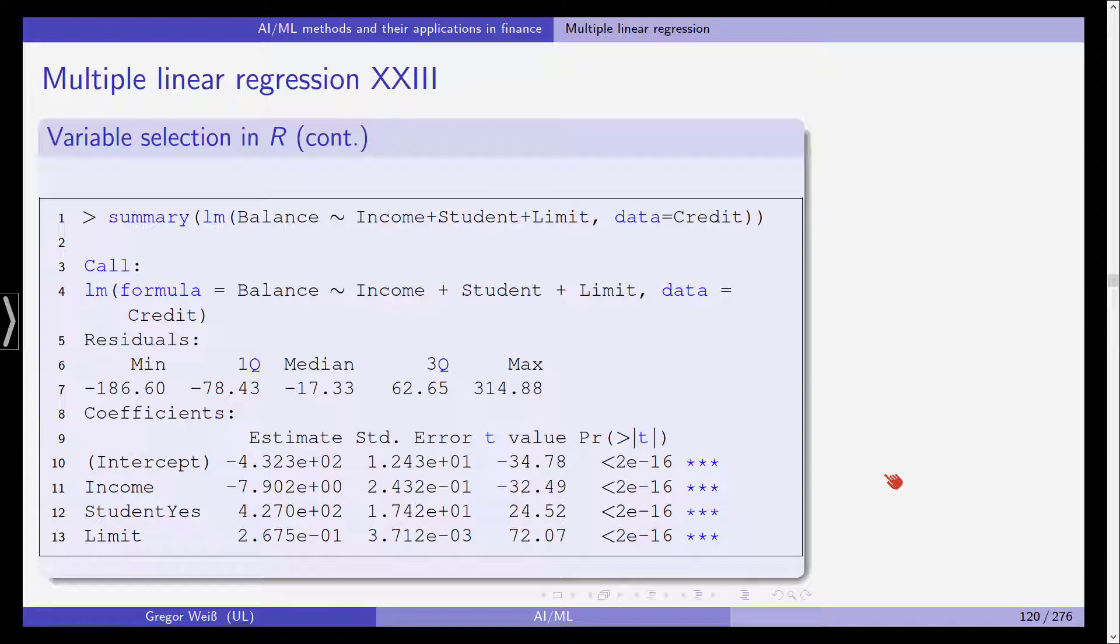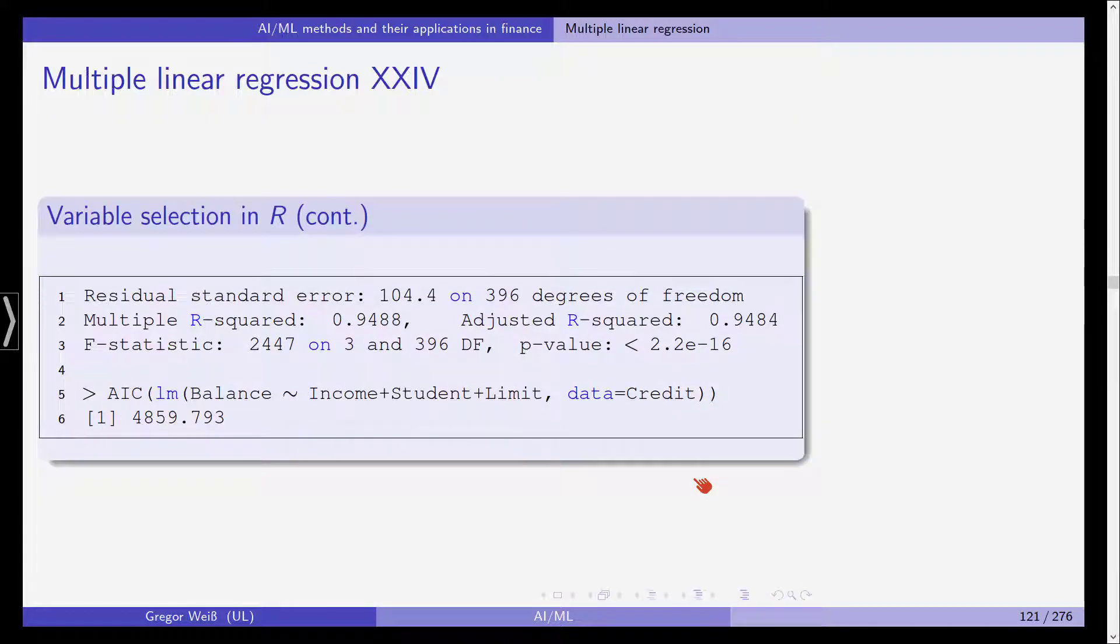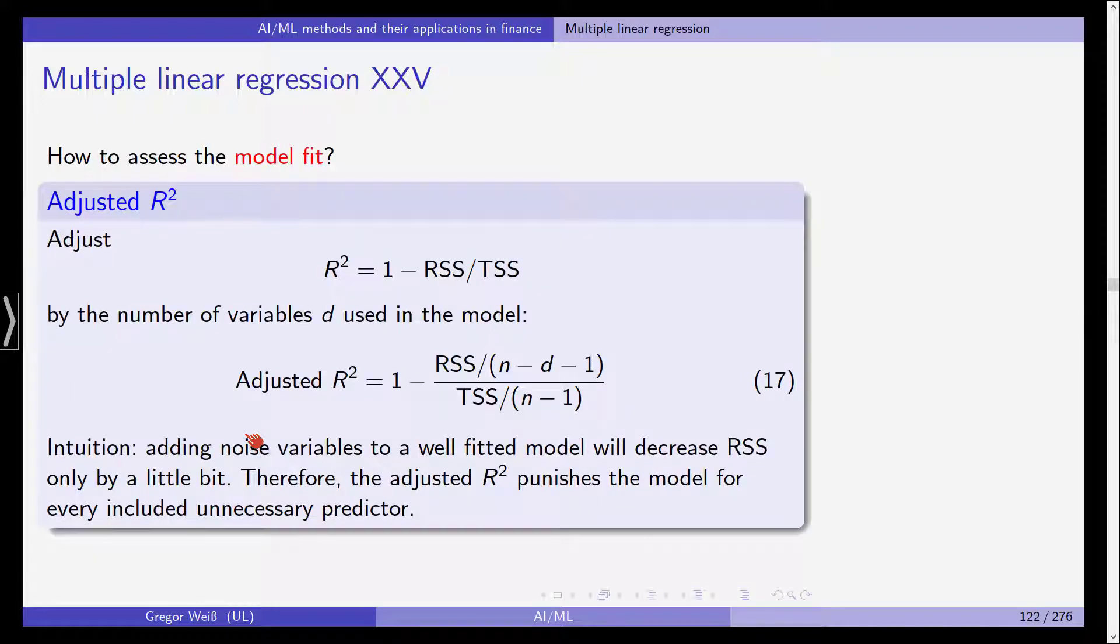We estimate a linear model with balance as the response, and income plus student plus limit, and all three variables remain statistically significant. And we can now see that just including these three variables gets us to an adjusted R squared of almost 95%, and the Akaike's information criterion is also much lower than for the simple linear regression. So we can see, yes, we should actually estimate a multiple linear regression with all three variables. And if we were now to include more variables, at some point I guess, we would arrive at some variables that we can leave out.